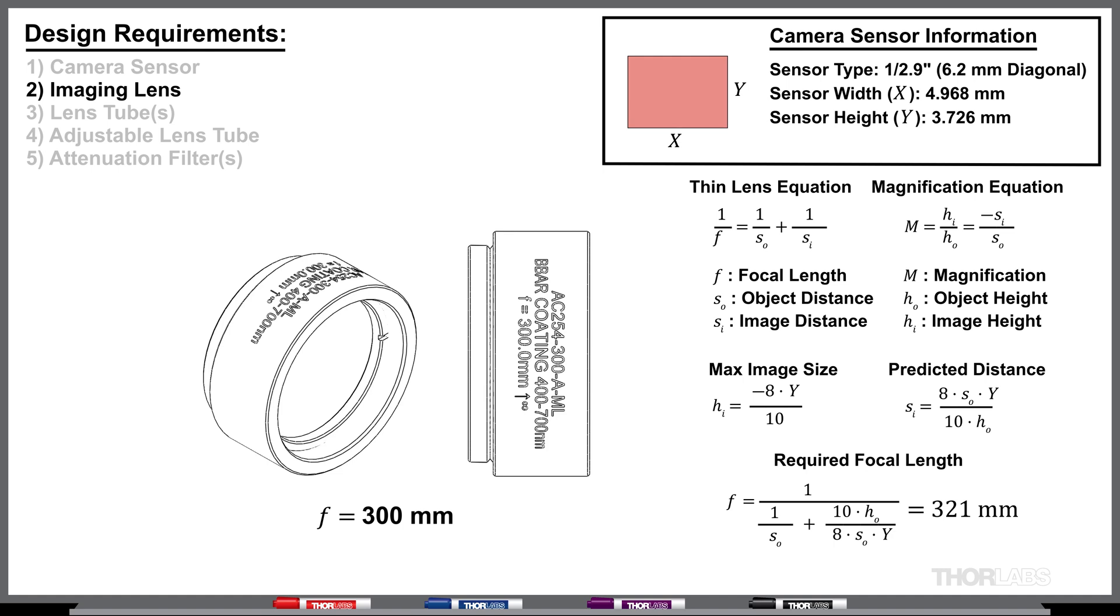We don't want to go over this value, so we'll use the closest off-the-shelf achromat, which has a 300 millimeter focal length. In a light-starved application, a larger diameter lens may be suggested. However, since we'll be attenuating the light, we'll use a 1 inch diameter to keep it compact.